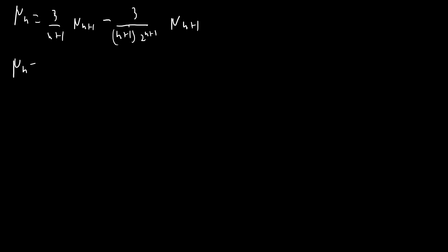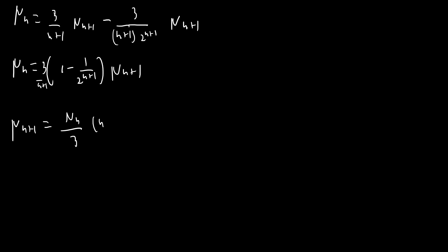Now I'm going to isolate μ(n+1) to get a nice recurrence relation. We have μ(n) equals 3/(n+1) · (1 − 1/2^(n+1)) · μ(n+1). Reorganizing, μ(n+1) equals μ(n) · (n+1)/3 · 2^(n+1) / (2^(n+1) − 1). Very nice.